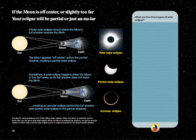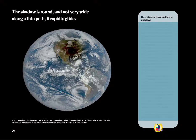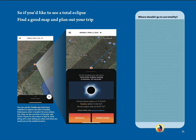If the Moon is off center or slightly too far, your eclipse will be partial or just annular. And even when all is as it should be, you must be in the shadow for totality. The shadow is round and not very wide. Along a thin path, it rapidly glides. So if you'd like to see a total eclipse, find a good map and plan out your trip.